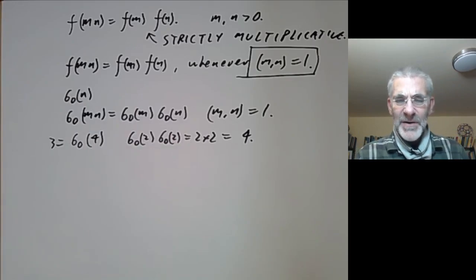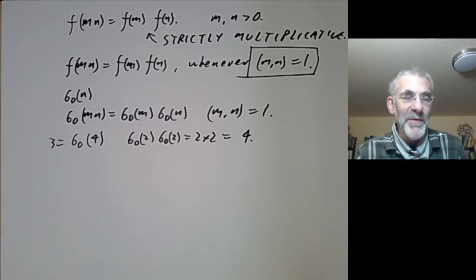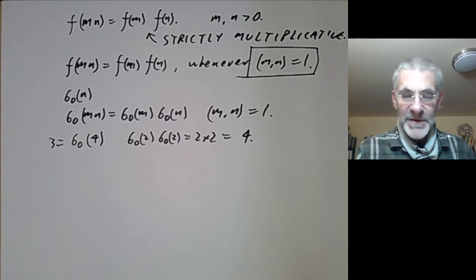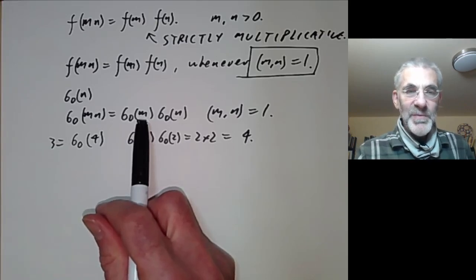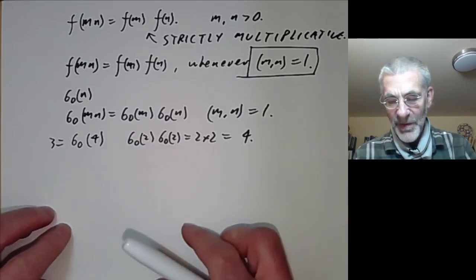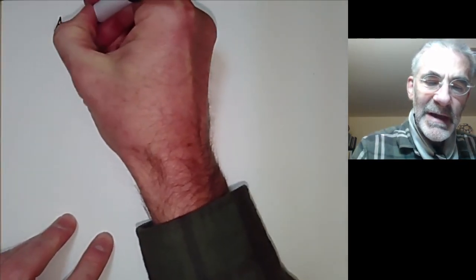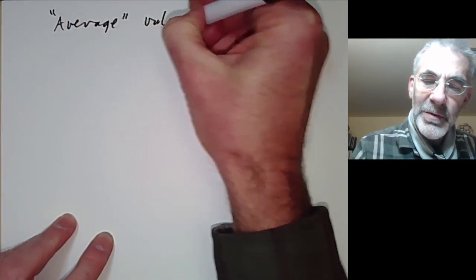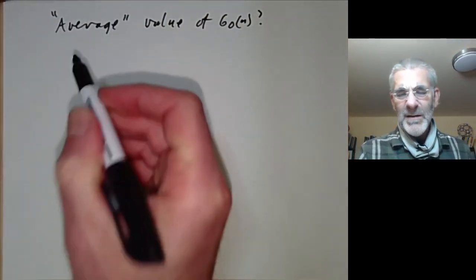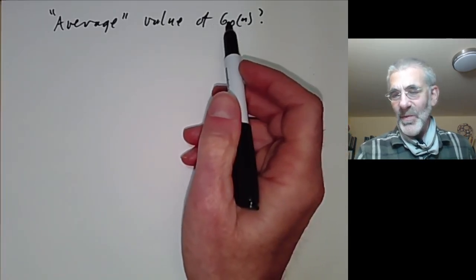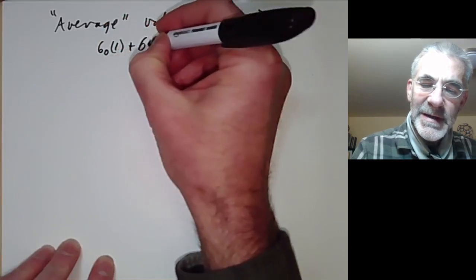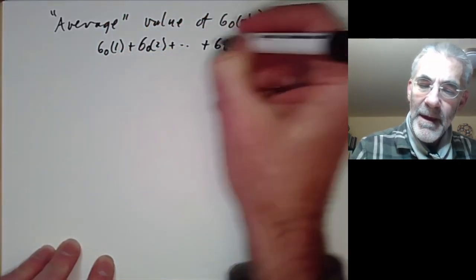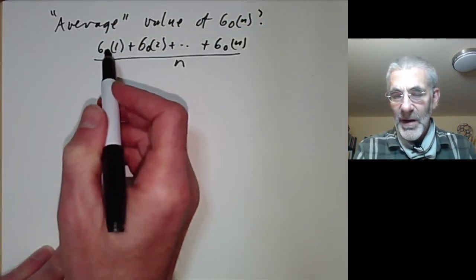What questions can you ask about arithmetic functions? You can ask about minimum, maximum, or average values. The minimum value of sigma_0 is not very interesting — sigma_0(n) = 2 whenever n is prime, and never less than that for n > 1, so the minimum for large n is just 2. The average value is slightly more interesting. We ask: what's the average value of sigma_0(n)? We can't average over all integers, but we can compute [sigma_0(1) + sigma_0(2) + ... + sigma_0(n)] / n.